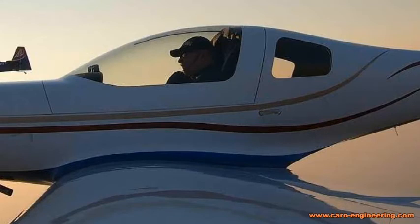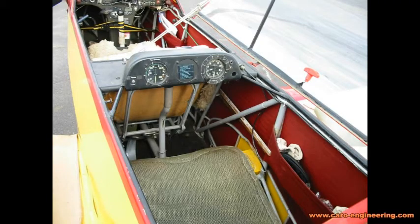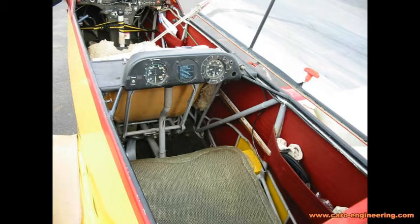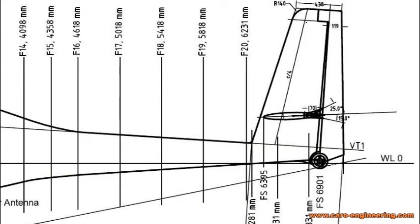By now you should have decided how many people will sit in the fuselage and if they're going to sit side by side or in tandem. This information is used to start drawing a fuselage shape. It starts out easy — sketch the people in side view and top view and draw the cabin around them. At this point you will need to start drawing or modeling things.